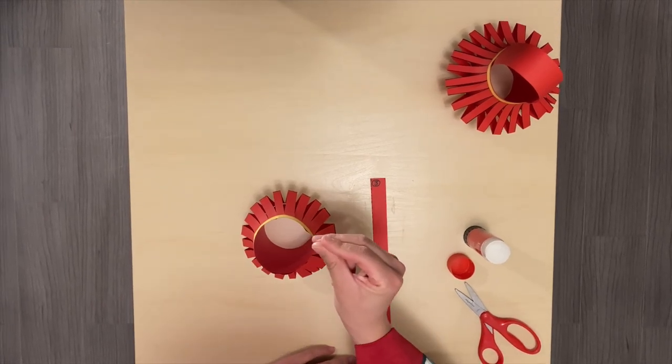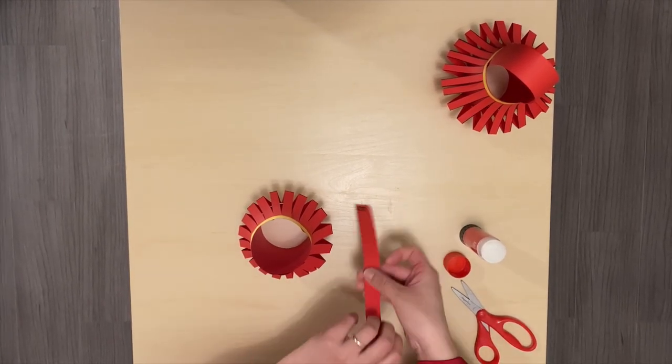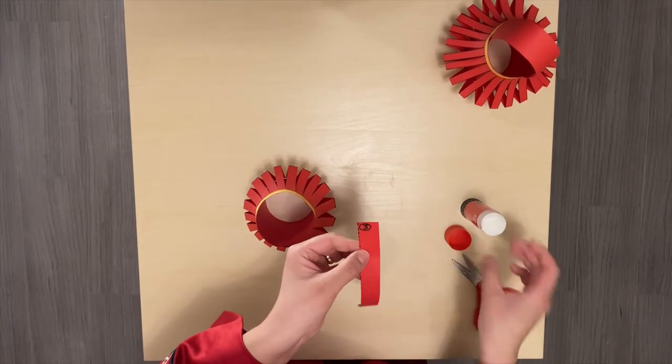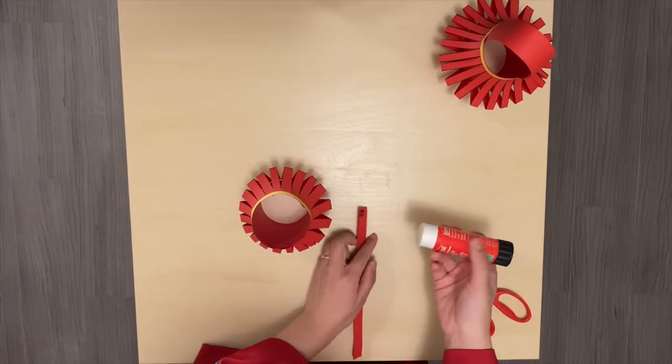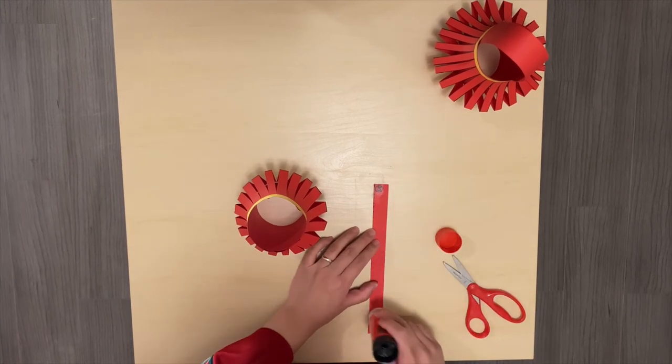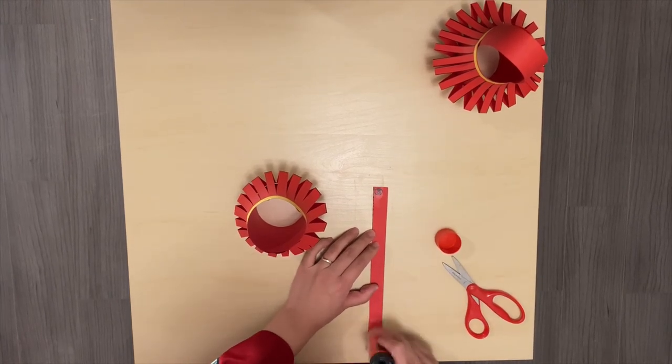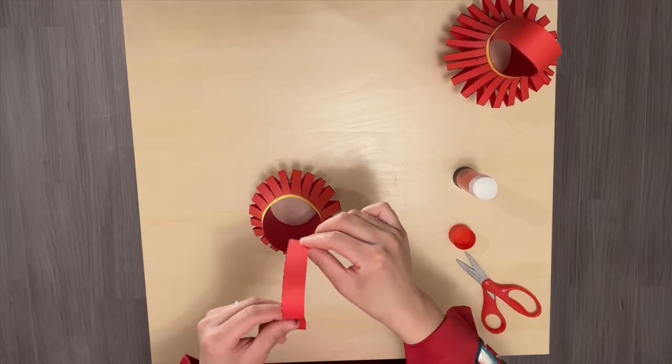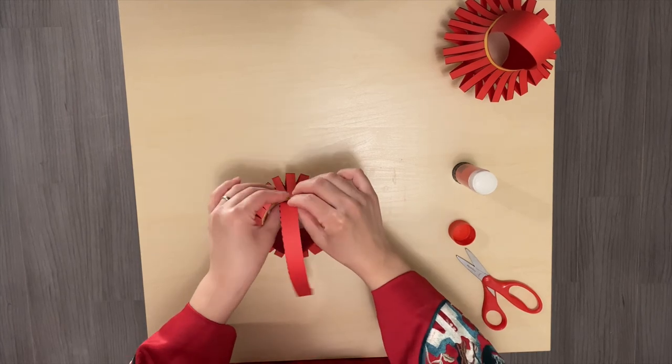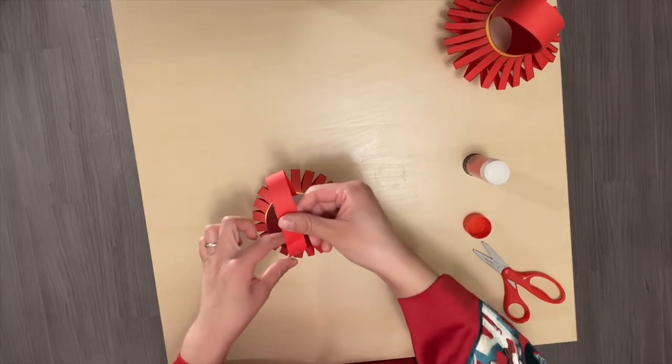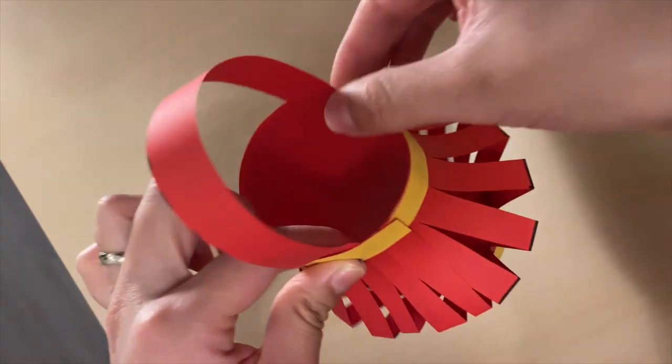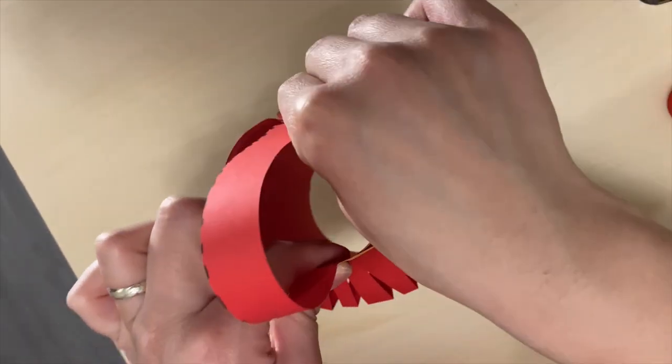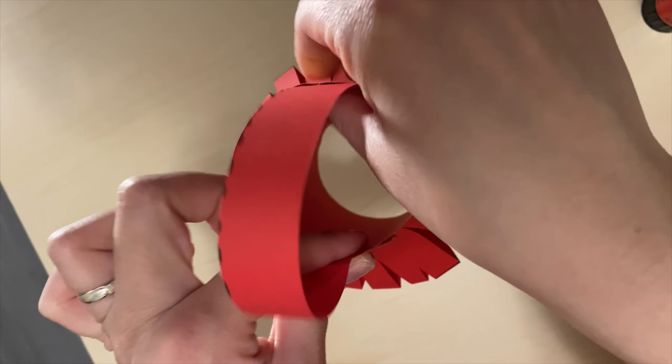Step number seven. You're going to pick up your piece number three, paper number three, and apply glue on both ends, the top and the bottom. You're going to fold your paper and glue it inside of your lantern. Make a little handle and use your thumb to push it down and make sure it's glued on there properly. And here is your lantern.